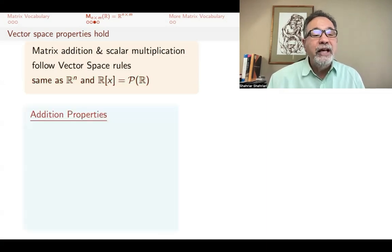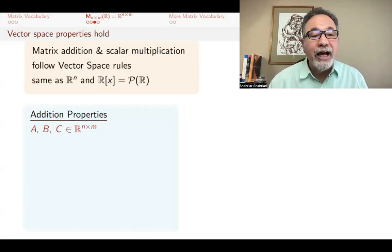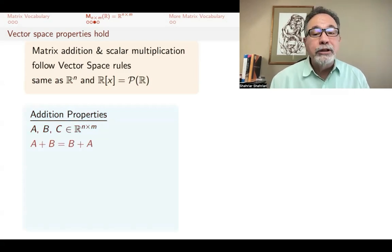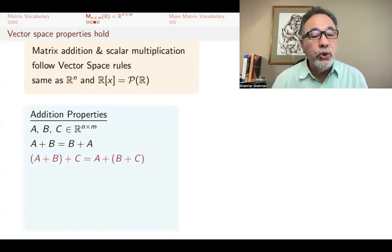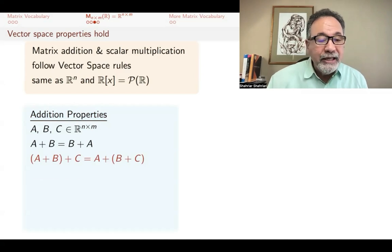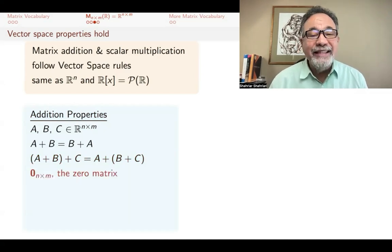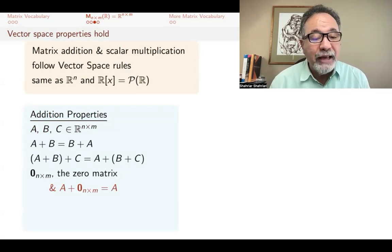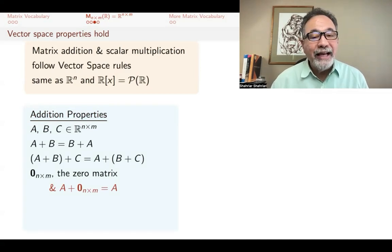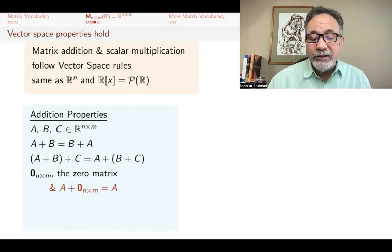So what are those properties? For addition, if you have three matrices, all of them the same size, all of them n by m, then A + B is the same as B + A. The addition is commutative. It's also associative. A + (B + C) is the same as (A + B) + C. We have a zero matrix, and the n by m zero matrix has the property that if you add it to other matrices of the same size, nothing happens, and you get that matrix back again. The important thing is that we have a zero matrix. We have something that when you add it to other elements, nothing happens.